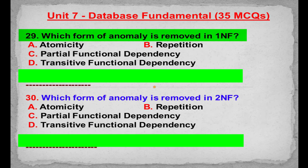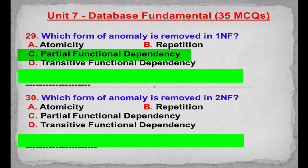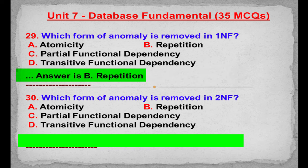MCQ number 29: Which form of anomaly is removed in 1NF? Option A: Atomicity. Option B: Repetition. Option C: Partial functional dependency. Option D: Transitive functional dependency. Correct answer is Option B: Repetition.